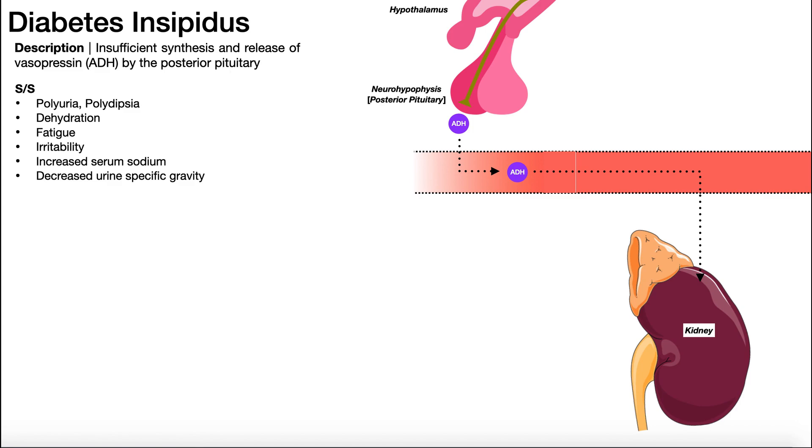Let's first review a little bit of the normal physiology here. So up here at the top of the picture, we have the hypothalamus. Part of the brain, it's right below the thalamus, part of the diencephalon. And then descending down from that, we have the pituitary structure.